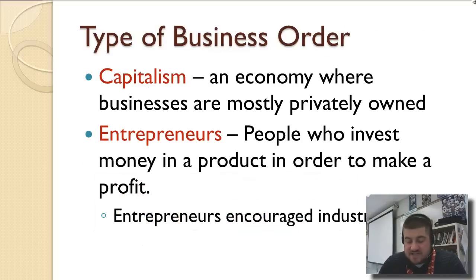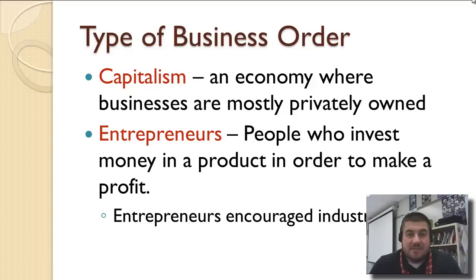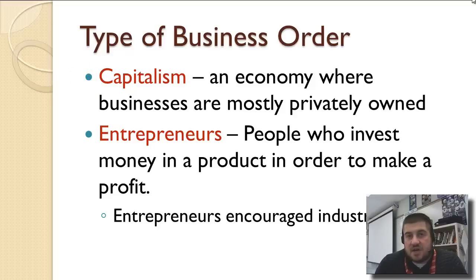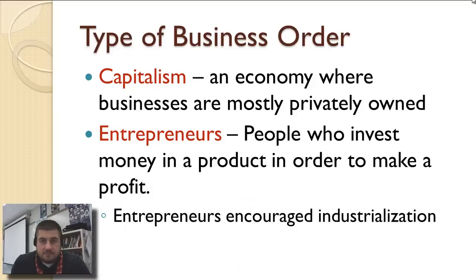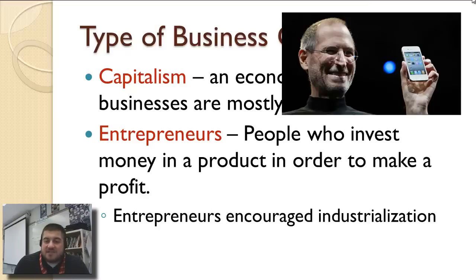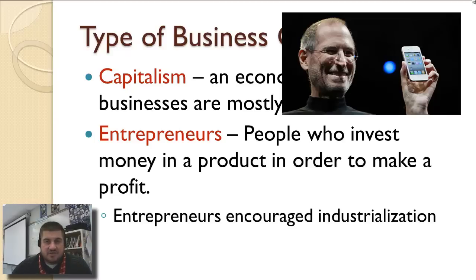Two types of business order show themselves in the United States during this time — capitalism as opposed to communism or socialism. Capitalism is an economy where businesses are privately owned. You and I could go start a business, offer a service or a good, and that would be allowed. If I did that, I would be known as an entrepreneur — people who invest their own time, energy, and resources into a product to provide a good and better their own lives. Entrepreneurs encouraged industrialization during this time.